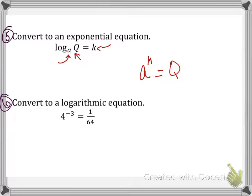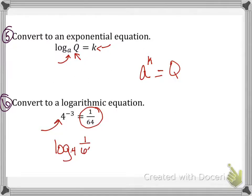The next one says convert to a logarithmic equation — the opposite of what we just did. Here my base is 4, so I rewrite it as log base 4 of (1/64) = -3.